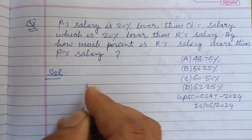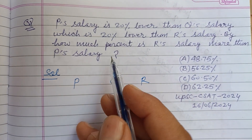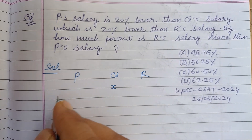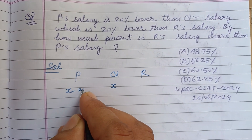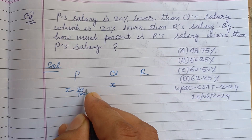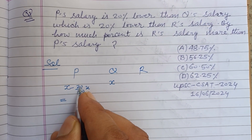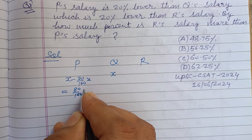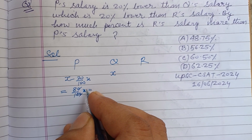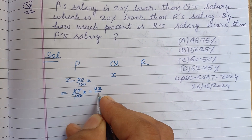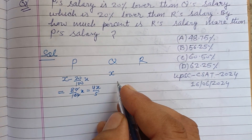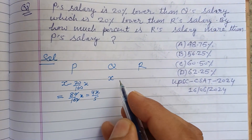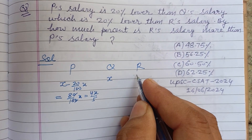So students, let there be 3 persons P, Q, R. P's salary is 20% lower than Q's salary. Let Q's salary be X, then P's salary is X minus 20% of X, that is 100 minus 20, which is 80% — so 80 upon 100 times X, giving us 4X upon 5. And Q's salary X is 20% lower than R's salary.